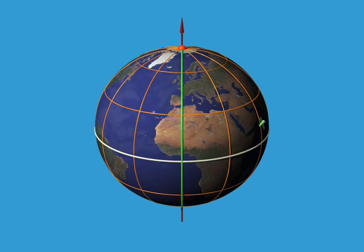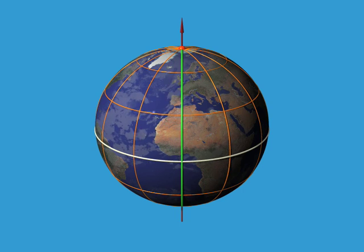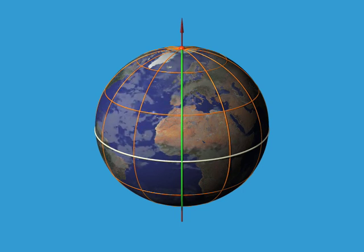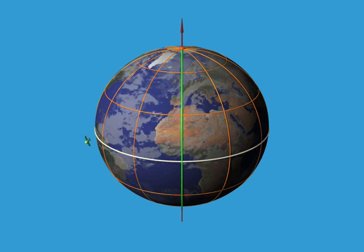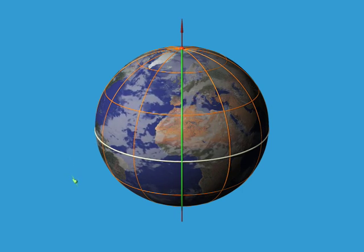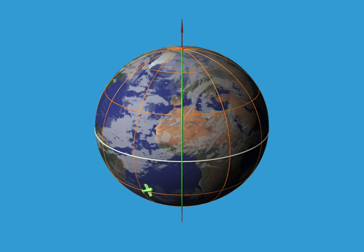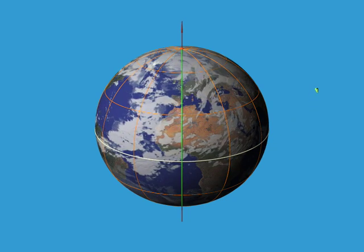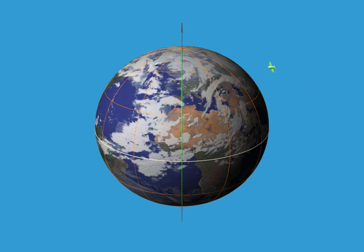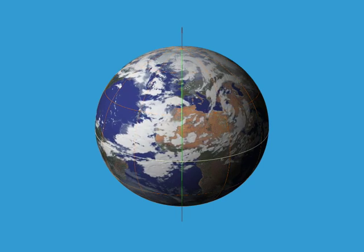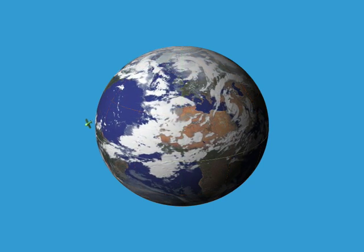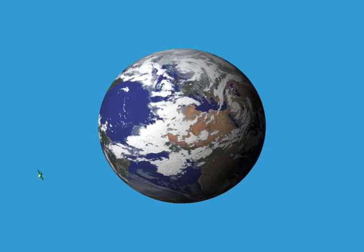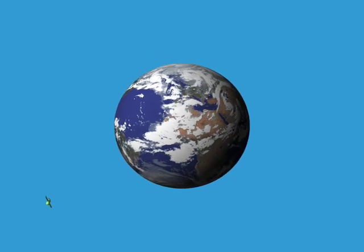Finally, if we let our little plane leave the Earth and fly off into space, then to locate it we need to give three numbers: latitude, longitude, and the altitude above the Earth. Since we now need three numbers to say where we are in outer space, we say that space is three-dimensional.